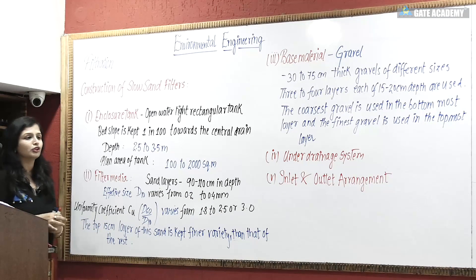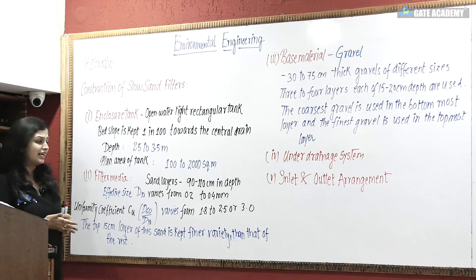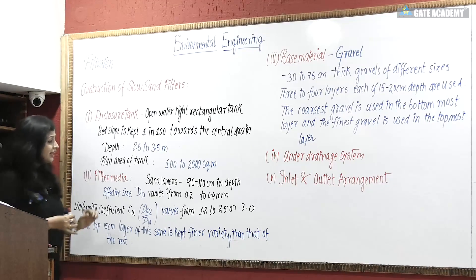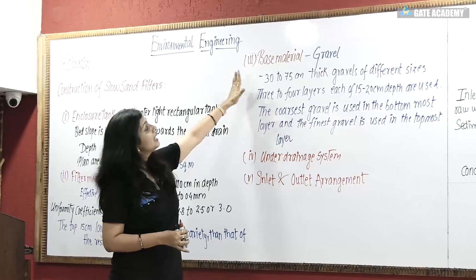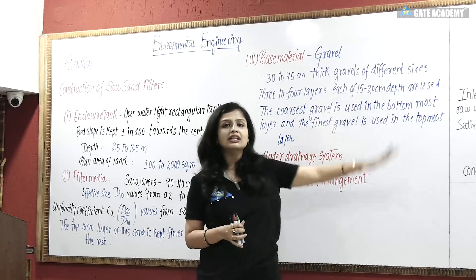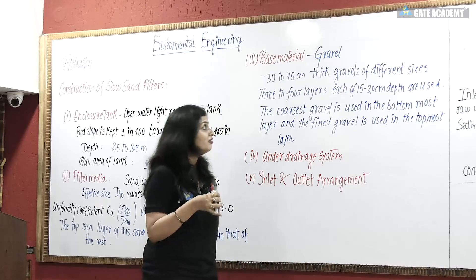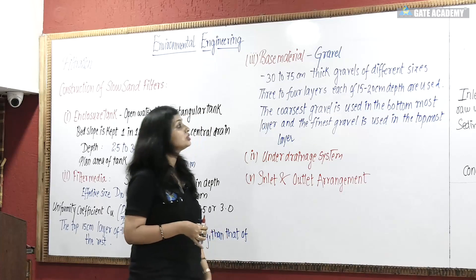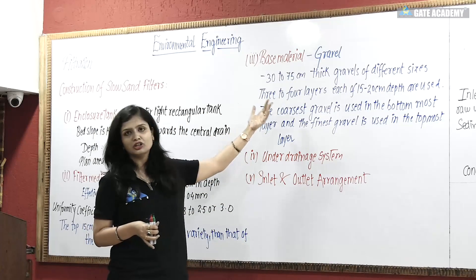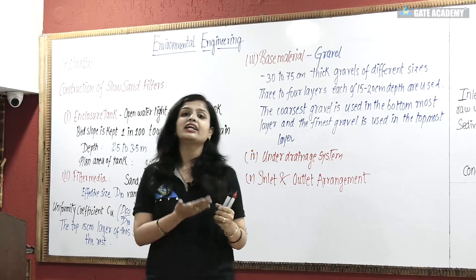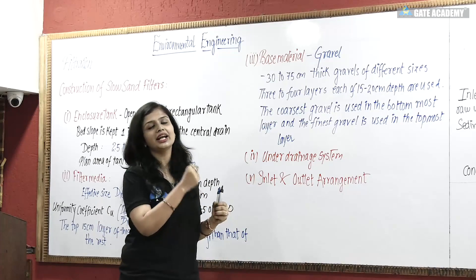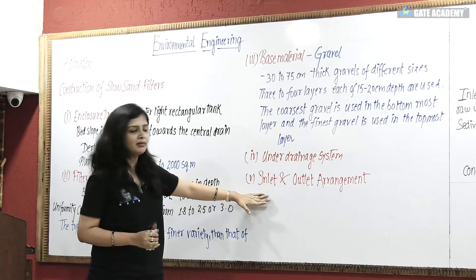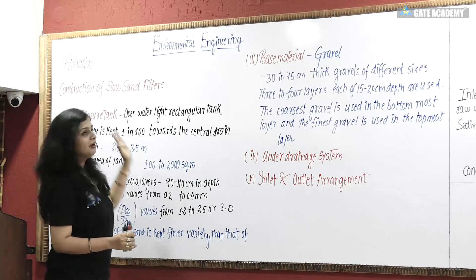The top 15 cm layer of sand is of the finer variety — its particle size is very small. For the base material gravel: it is 75 cm thick, ranging from 30 to 90 cm. There are 3 to 4 layers each of 15 to 20 cm depth. The coarse gravel layer is at the bottom and the finest gravel layer is at the top. One function of gravel is that it supports the sand layers. The gravel is below the lateral drains and main drain — this is the under drainage system, consisting of lateral drains and the main central drain, along with the inlet and outlet arrangement.